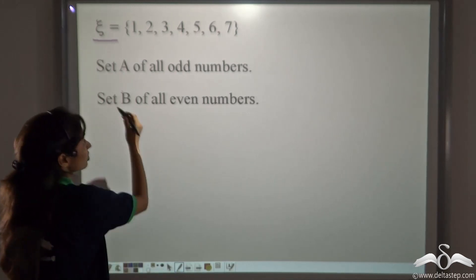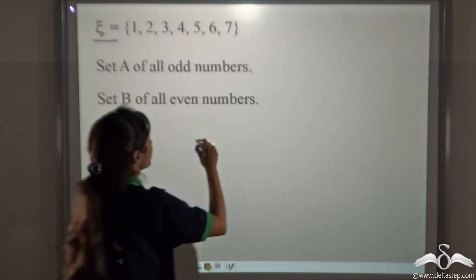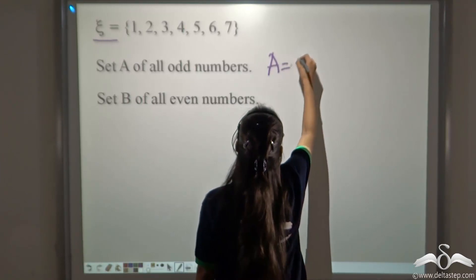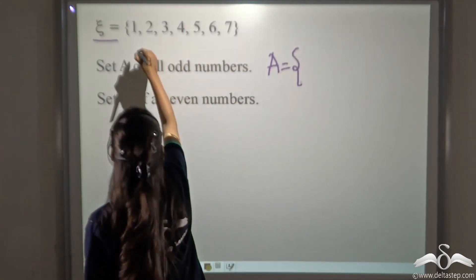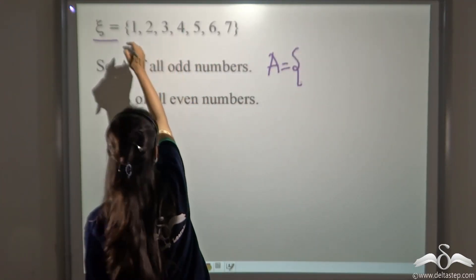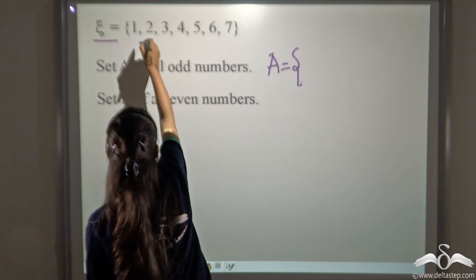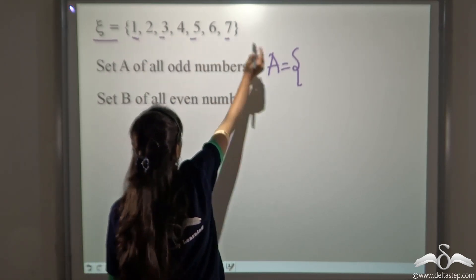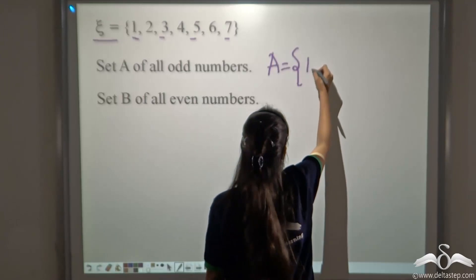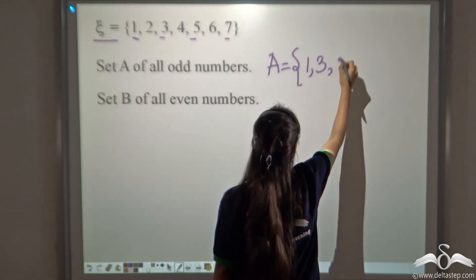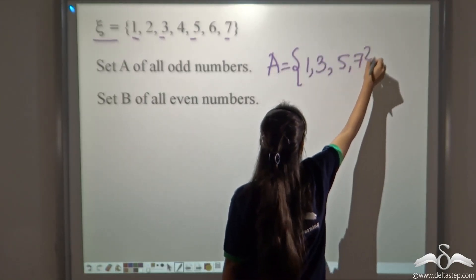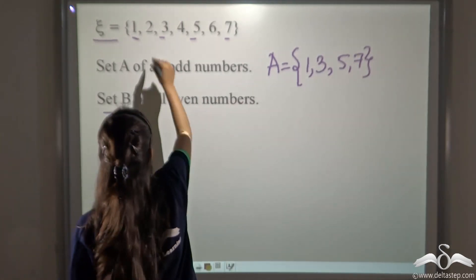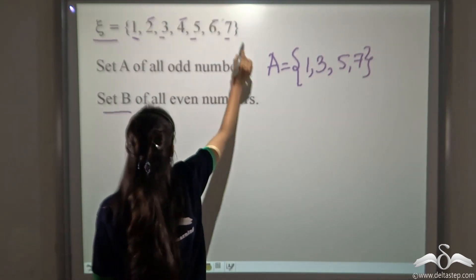First of all, let's write set A of all odd numbers. You can see in this set — what are the odd numbers in the parent set? They are 1, 3, 5, and 7. And what is set B of all even numbers? That is 2, 4, and 6.